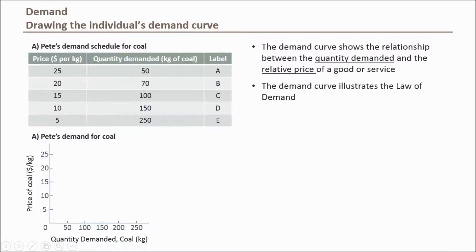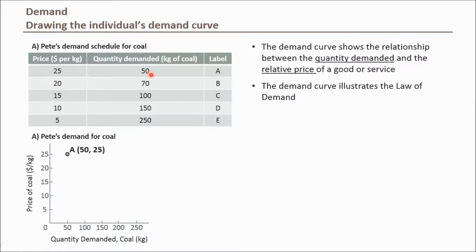All we now need is information describing the relationship between price and demand, usually provided in a table or already plotted on a graph. Table A provides price and quantity demanded combinations labeled A to E — Pete's demand schedule for coal. It shows the quantity of coal Pete is willing and able to buy at each price level. Plotting these combinations: point A represents coal at $25 per kilogram, where Pete will only be willing to buy 50 kilograms.